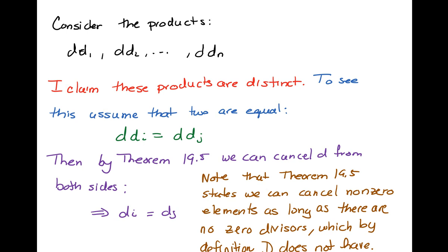Now I just want to caution that theorem 19.5 doesn't say this just for integral domains; it's actually a little more general. It says we can cancel non-zero elements as long as there are no zero divisors in our ring. Well, integral domains do not have zero divisors, which is why I'm allowed to apply this in this case.